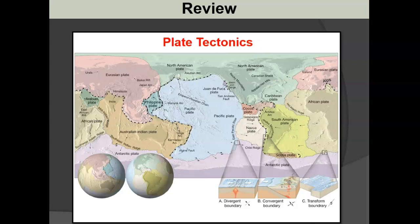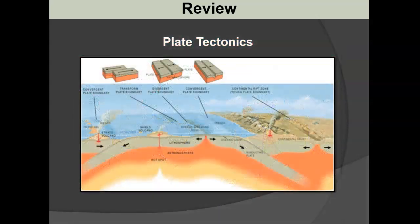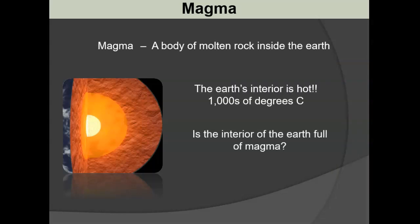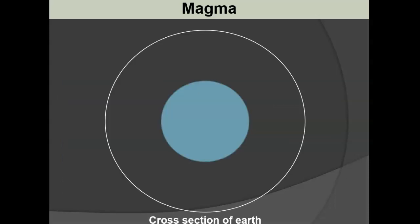Volcanoes don't happen everywhere, and we want to understand why. To make a volcano we need a source of magma - some molten rock. Plate tectonics gives us some of these molten materials, but they don't occur at all plate boundaries. When we look at a crude cross section of the earth, magma appears only in small pockets very near the surface around the globe, not deep inside the earth.